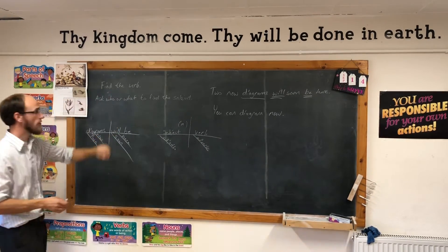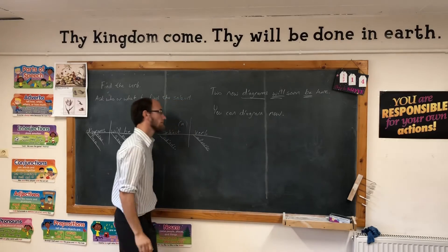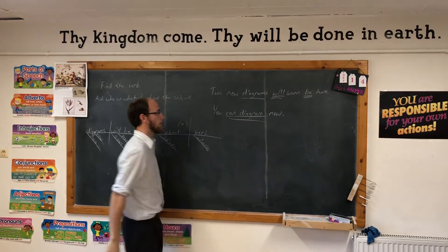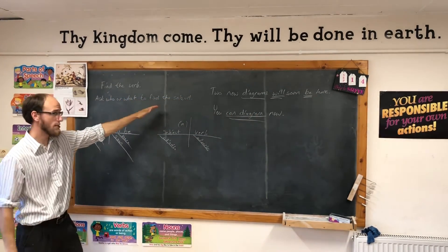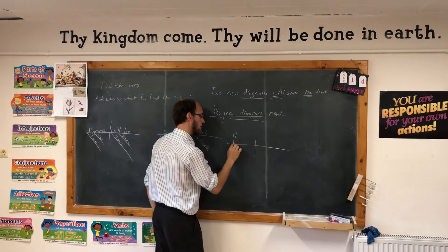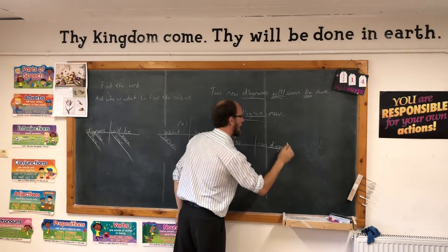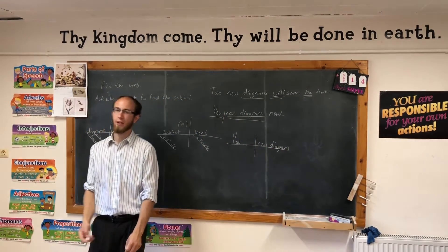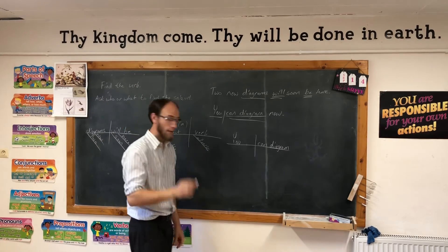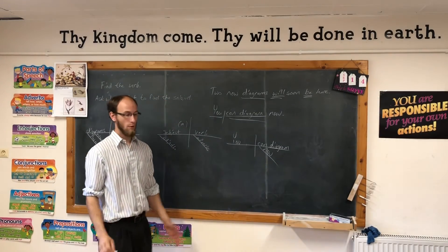Let's diagram the second one. First is the helping verb, helping the main verb: diagram. And who or what? Let's ask who or what to find the subject. Who or what can diagram? You. You can diagram. Now — does now go under you or does it go under diagram? Which one is it modifying? Diagram. Good, it is telling when. You can diagram now.